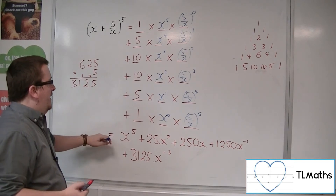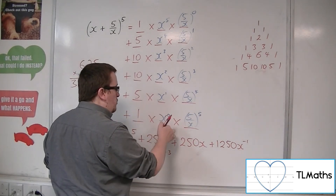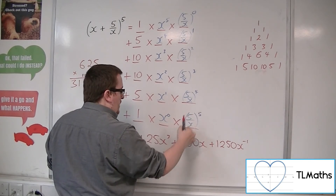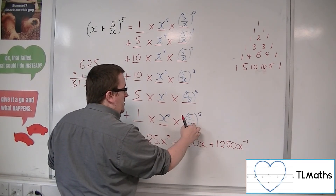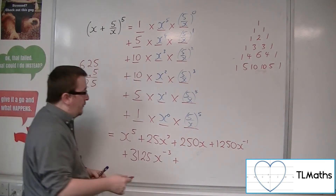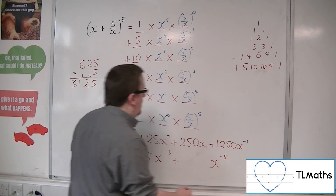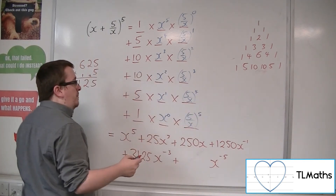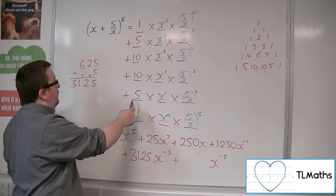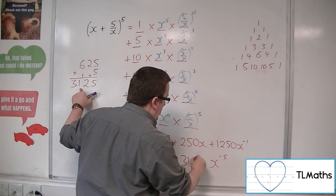And finally, we've got 1 times x to the 0, which is just 1 times (5/x) to the power of 5. x to the power of 5 in the denominator gives x to the minus 5. And 5 to the power of 5: we just worked out 5 to the power of 4 was 3125, times 5 is also 3125 — so we get 3125x to the minus 5.